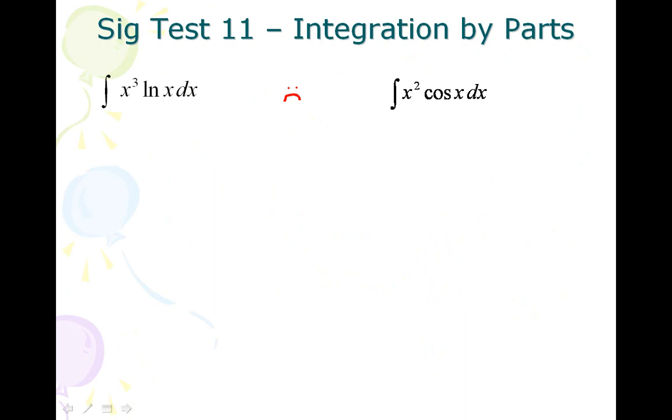If you see ln let u equal ln of x, dv is equal to x cubed. Take the derivative of ln you get 1 over x, antiderivative of x cubed you get x to the 4th over 4.